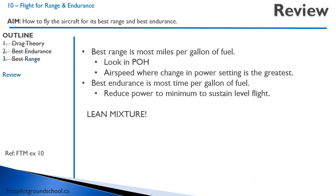To review: best range speed is the flight with the most miles per gallon of fuel. Look it up in the pilot operating handbook, or identify the airspeed where the change in airspeed for a given increase in power setting is the greatest. Best endurance is the most time per gallon of fuel — reduce power to the minimum needed to sustain level flight. And it's imperative to remember to lean the mixture. That concludes this lesson on flight for range and endurance. See you in the next lesson, thanks for joining me.